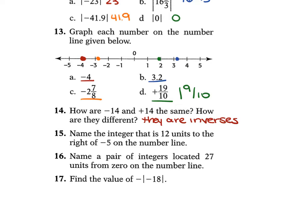For 15, it says: name the integer that is 12 units to the right of negative 5 on the number line. So, we're going from negative 5 to the right 12 units. Starting at negative 5 and counting: 1, 2, 3, 4, 5, 6, 7, 8, 9, 10 — 11 would be 6, 12 would be 7. So that would be positive 7.